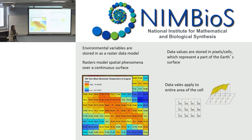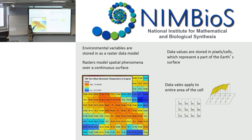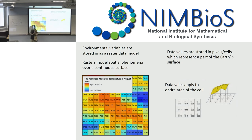For those of you with no ArcMap experience, I'll explain what a raster is, because all of our environmental variables are going to be in raster format. A raster is basically a gridded surface where each cell, pixel, or grid has a data value in it. So let's say we're talking about elevation or temperature — we've measured some value for each unit of the Earth and put it in each of those grids. That's how our environmental variables will be put into our model.